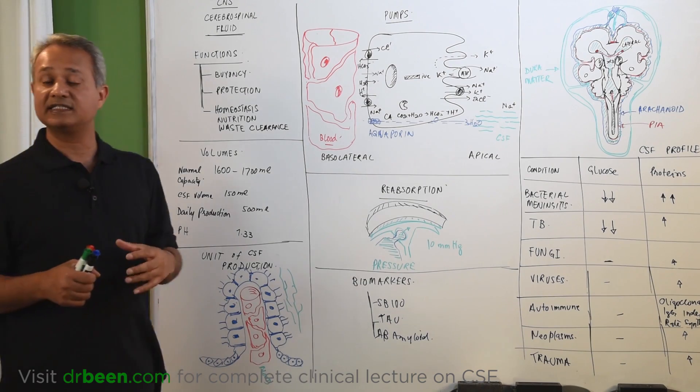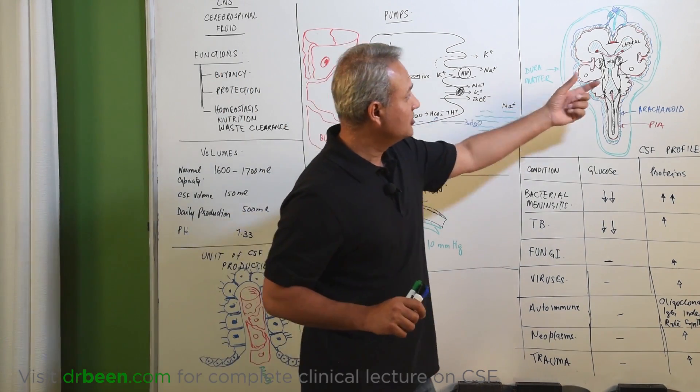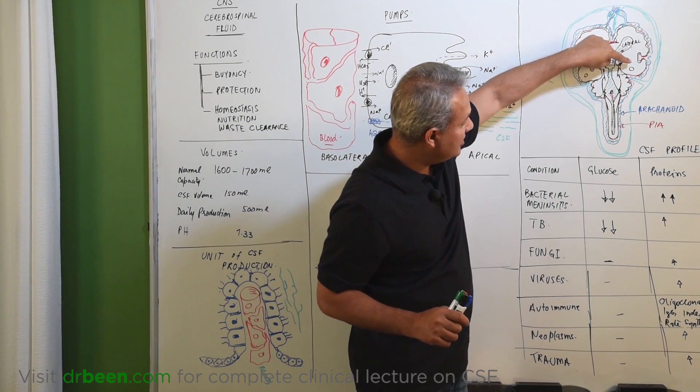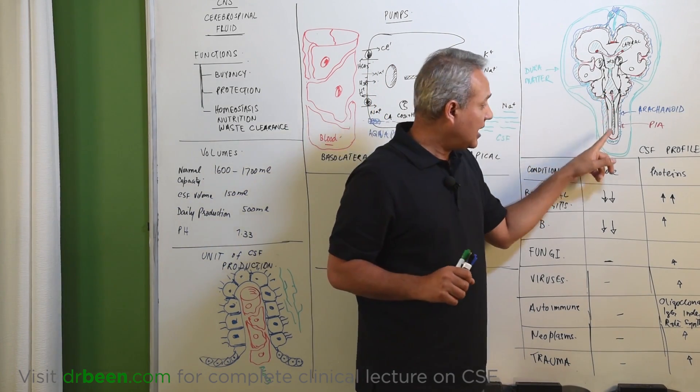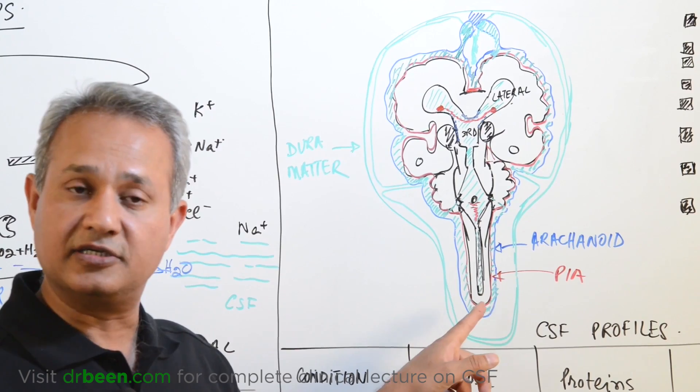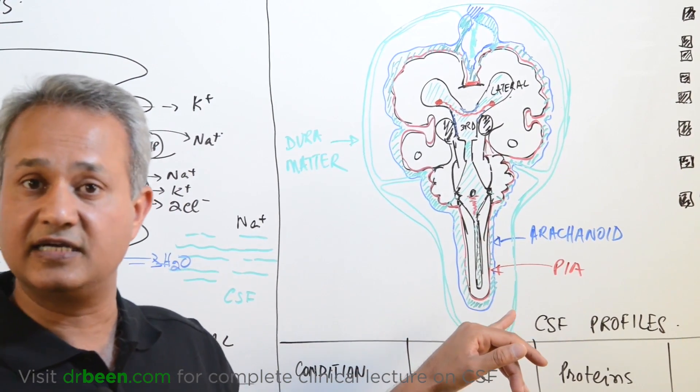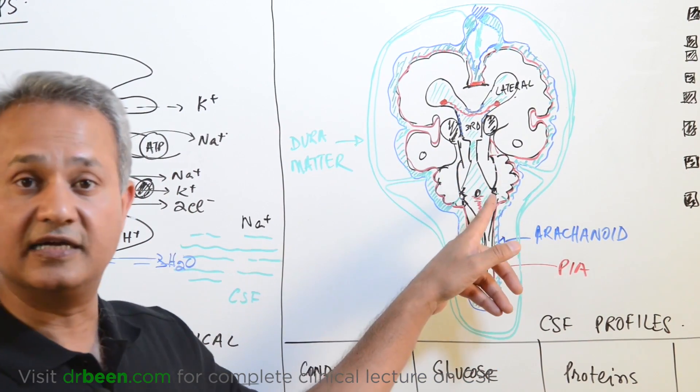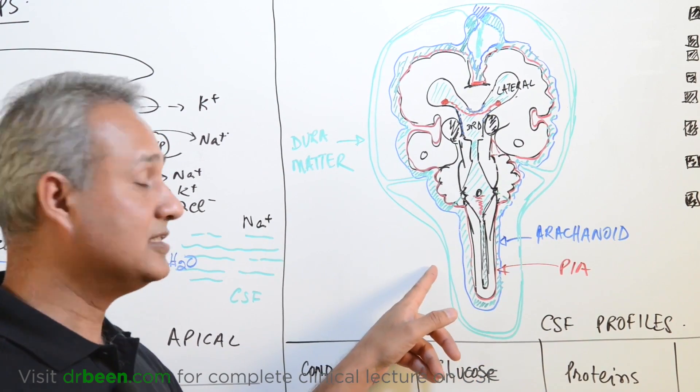Now, let us look at how the CSF is produced, but even before that, why not we look at the flow first. So, come here to this diagram. This is the brain tissue here. This red layer around the brain tissue is the pia mater. Outside the pia mater, this blue layer is the arachnoid mater. So, between the pia mater and the arachnoid mater is the subarachnoid space. That is where the CSF actually lives in addition to living inside the ventricular cavities.